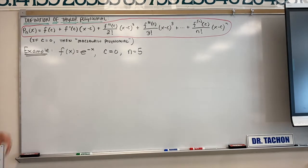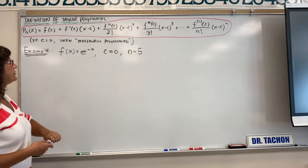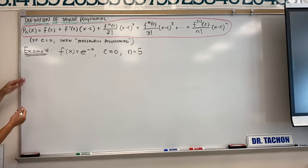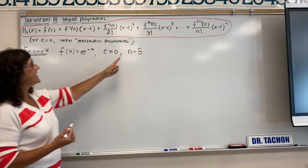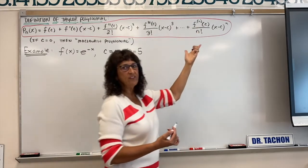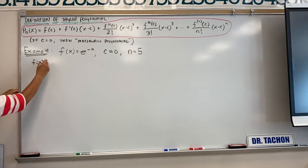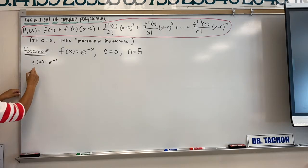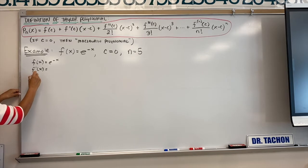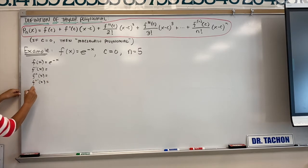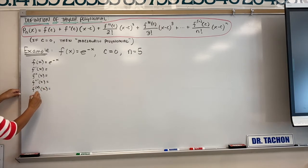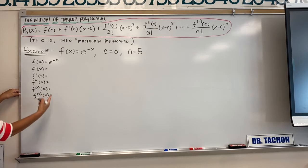When you are expanding a transcendental function using a Taylor polynomial, the first thing you want to do is list the derivatives. We want to go out to n equals 5, meaning we go out to the fifth derivative. I'm going to write the function down. For anything bigger than the third derivative, write the number in parentheses — that's the proper notation for your derivatives.